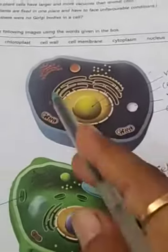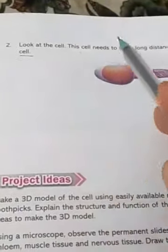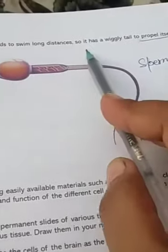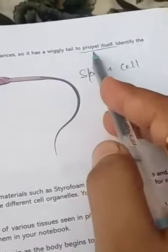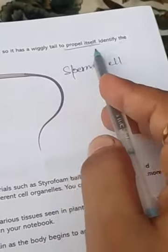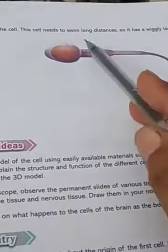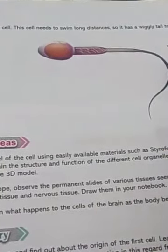For question number two, look at this cell — it needs to swim a long distance, so it has a tail to propel itself. Identify the cell. This is a sperm cell from the male, also called a male gamete.